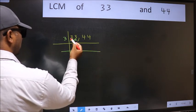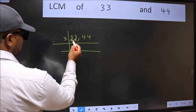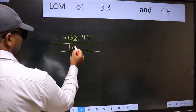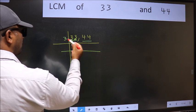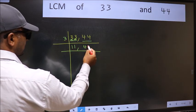First number 3. When do we get 3 in 3 table? 3 ones 3. The other number 3. When do we get 3 in 3 table? 3 ones 3. The other number 44. Not divisible by 3. So you write it down as it is.